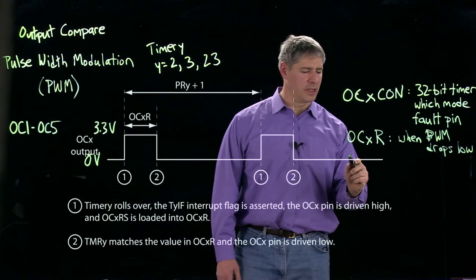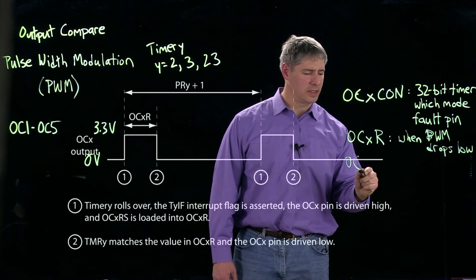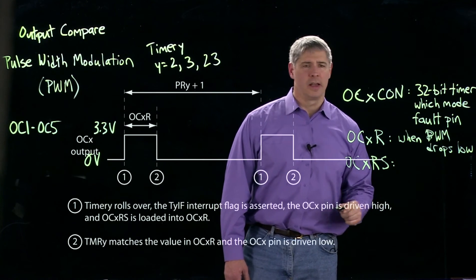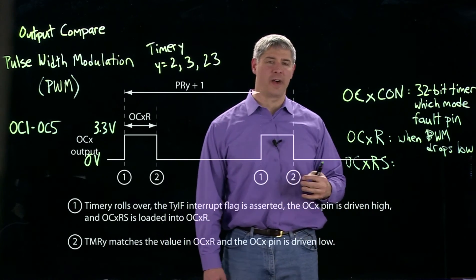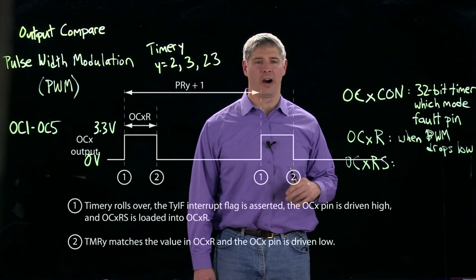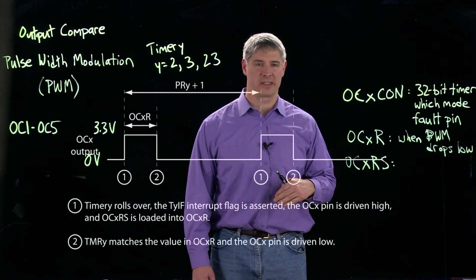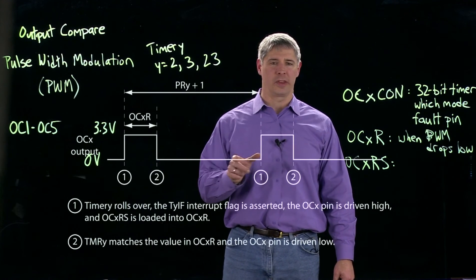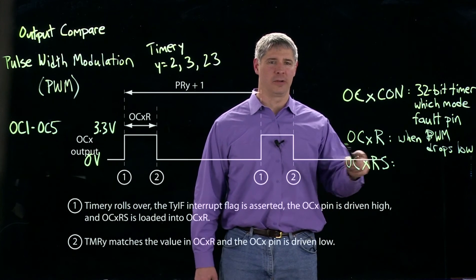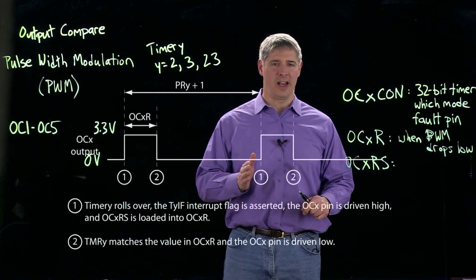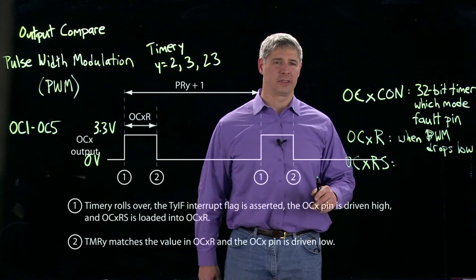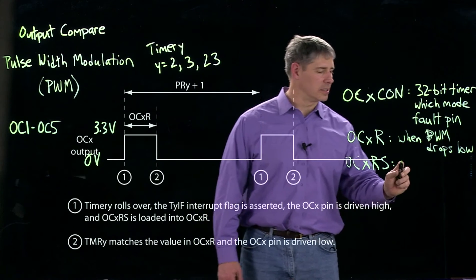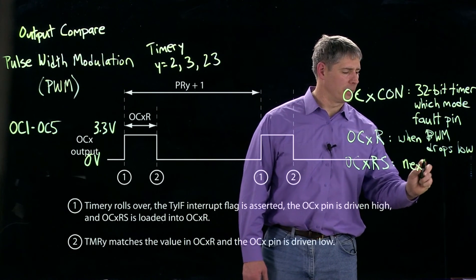The last special function register is OCXRS. This register holds the value that we want OCXR to change to on the next pulse. So if we want to update the width of the pulse, we write a value to OCXRS, and then the next time it triggers high, the value of OCXRS gets loaded into OCXR. This is the next update mechanism.